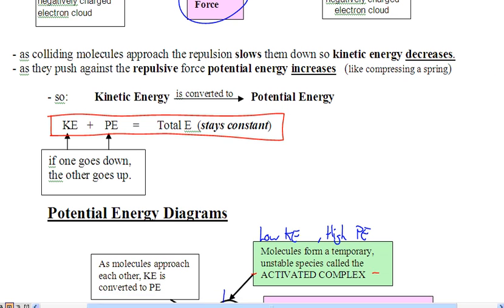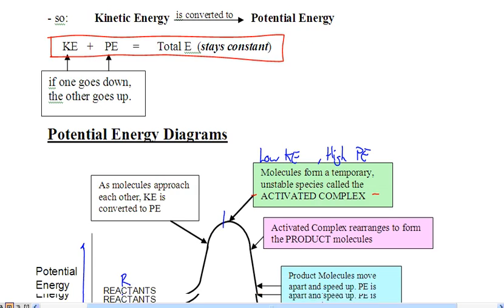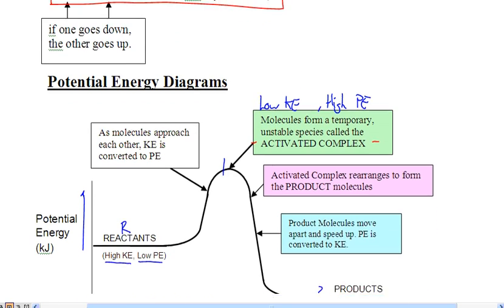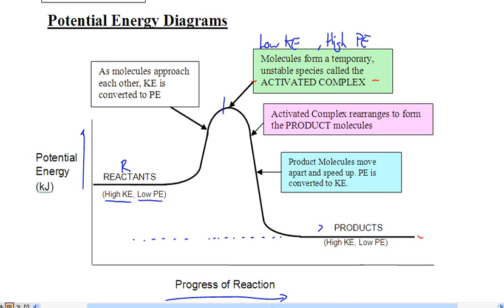That is Einstein's principle — you cannot destroy or remove energy, just transform it into different forms. We're going to graph how the potential energy changes over time, and that graph has a lot of information. It all stems from the fact that this is Delta H and this is an exothermic reaction.